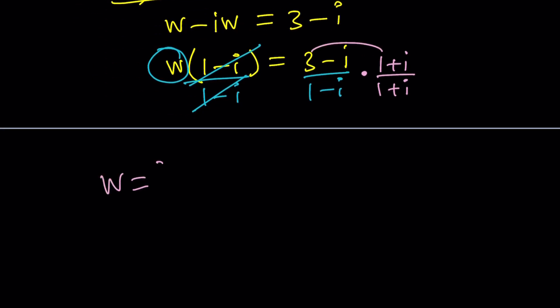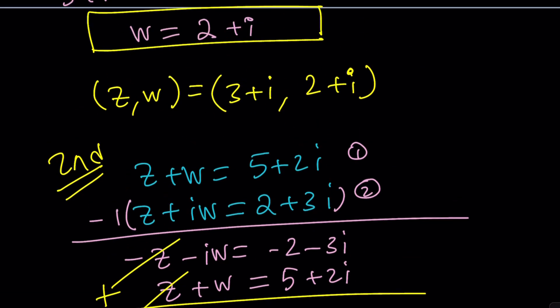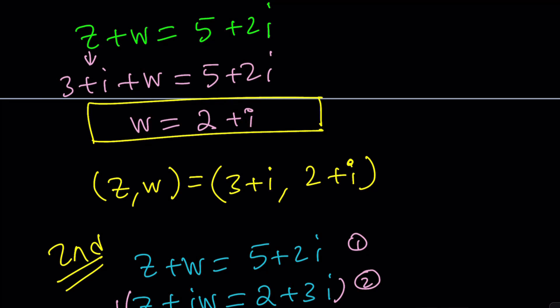Distribute this. 3 plus 3i minus i minus i squared which is plus 1 divided by 2. Always replace i squared with negative 1 right away. You don't have to worry about it later. 3 plus 1 is 4 plus 3i minus i is 2i divided by 2. And again w from here is going to be 2 plus i. Did we find that answer before? Do you remember? What was the first method? The first method gave us the same thing. But this time we found the w first.